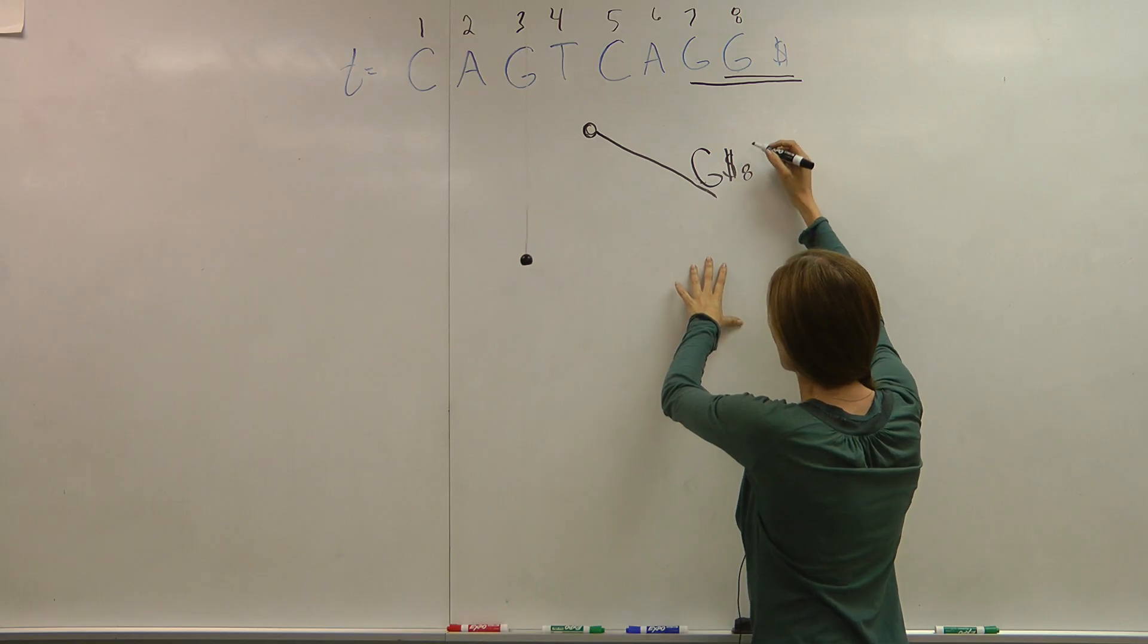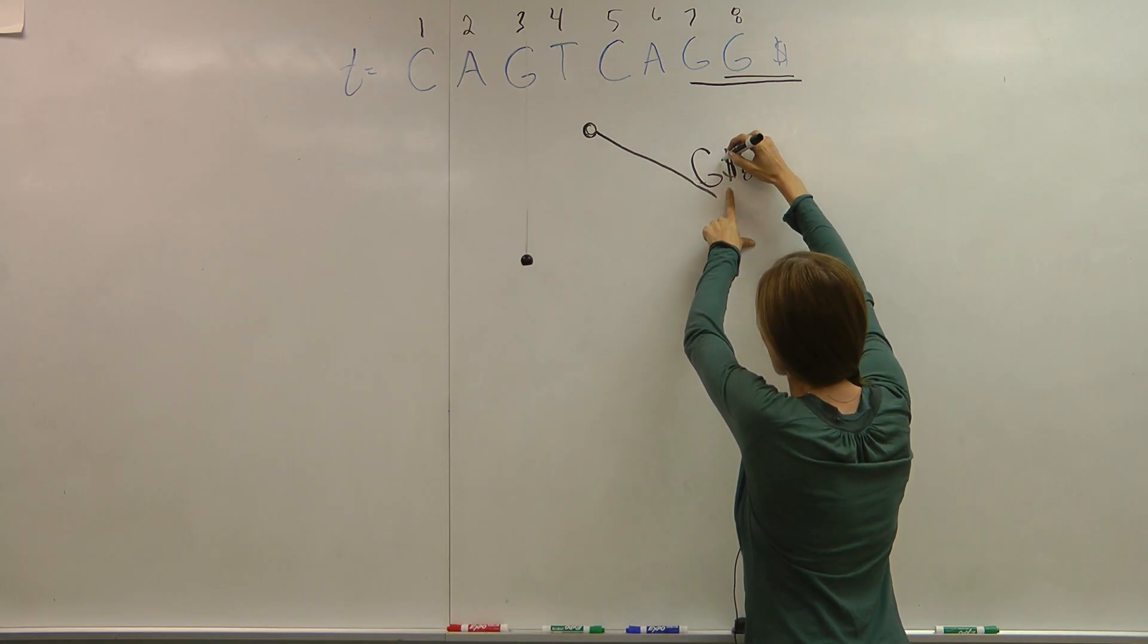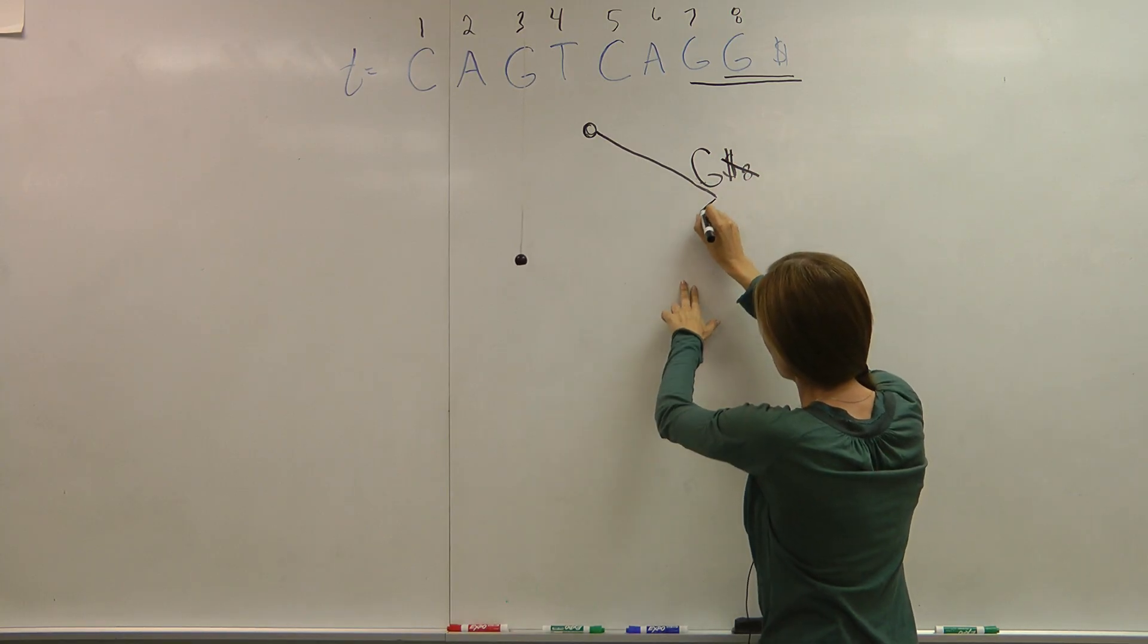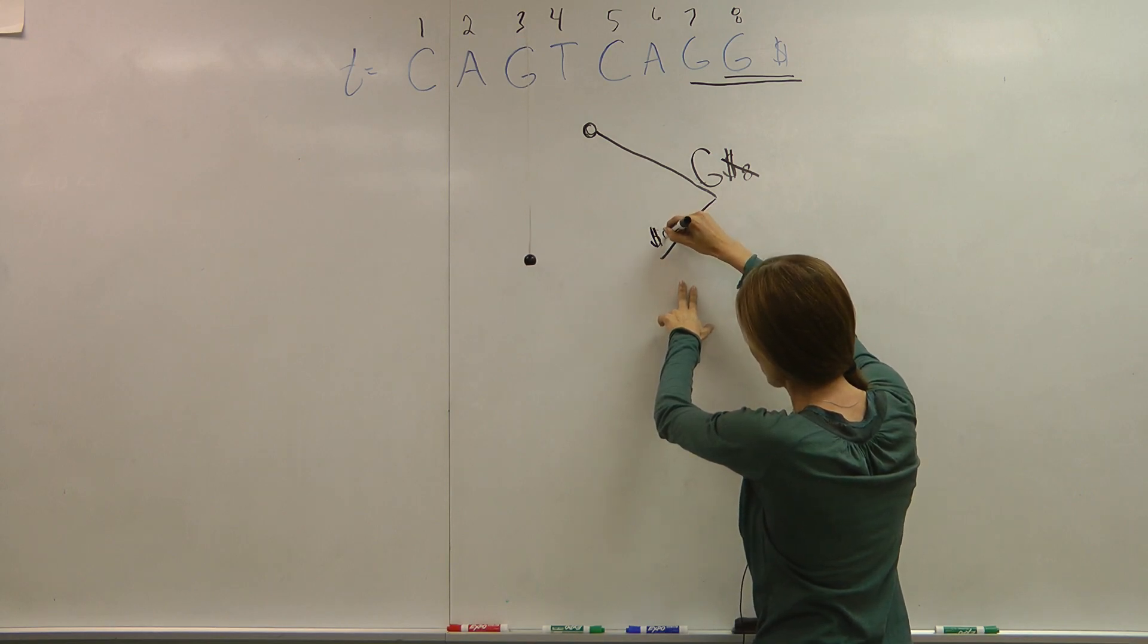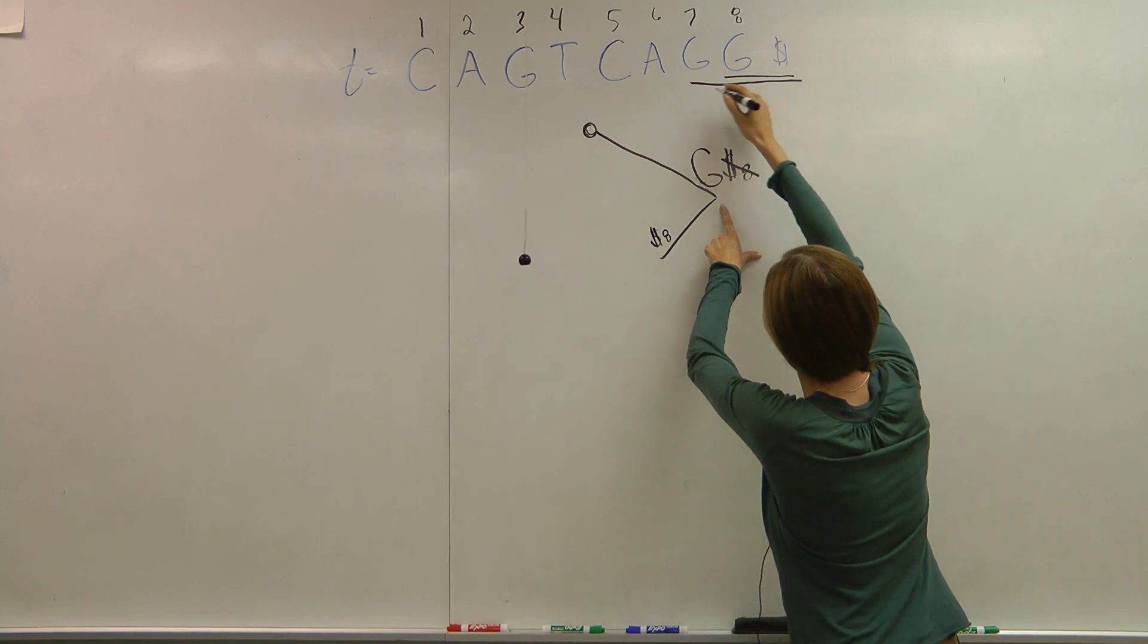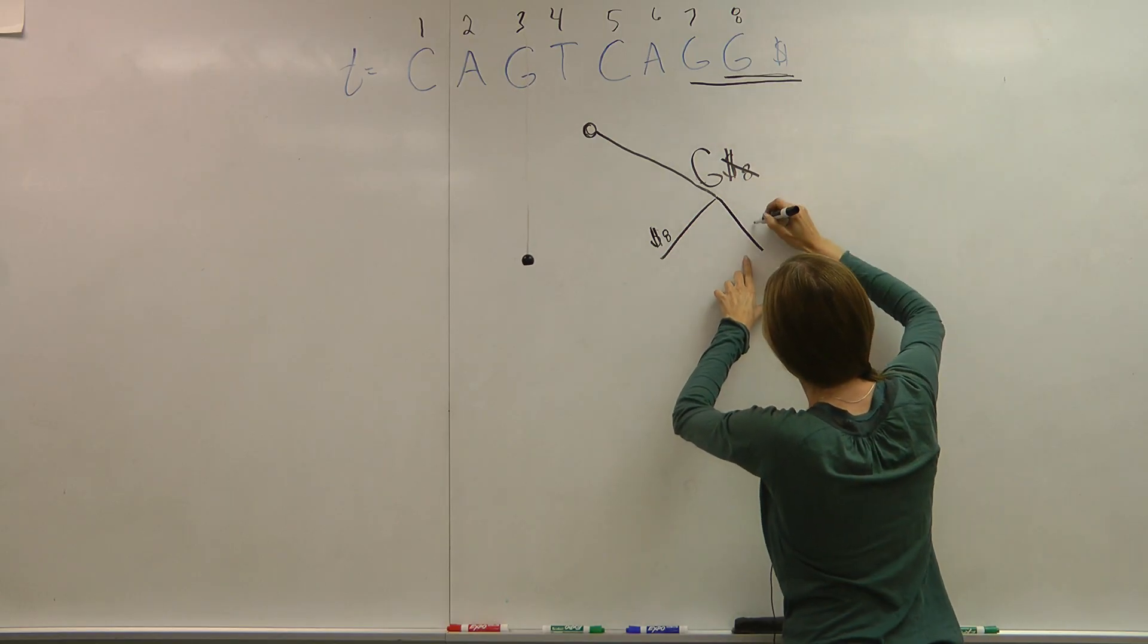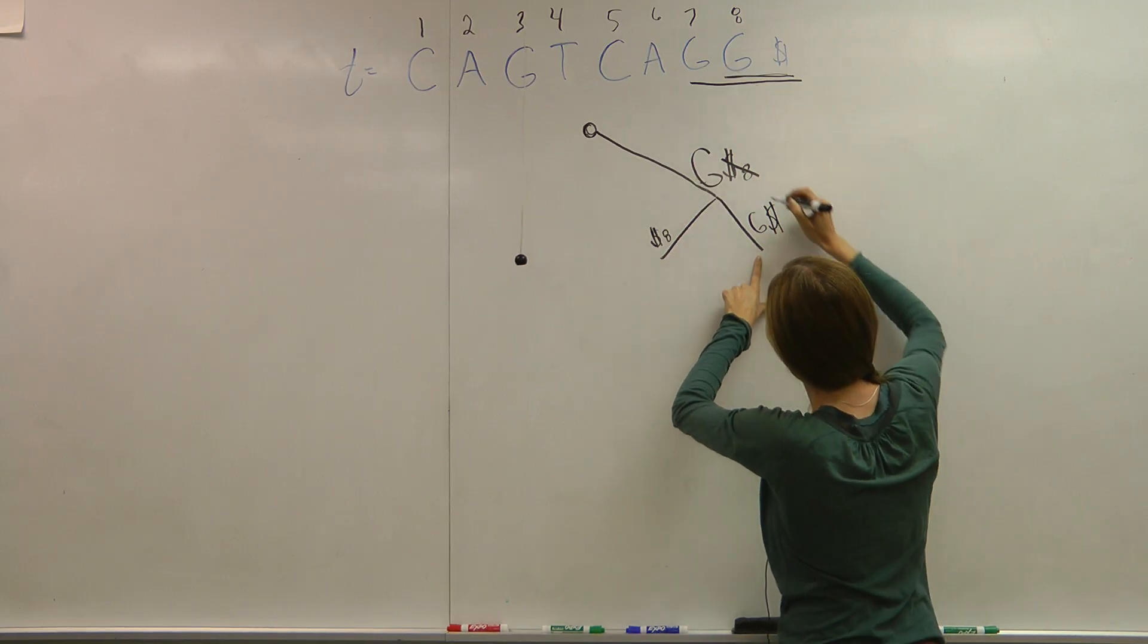I just have the dollar sign. So after this G, I should have two choices. So I have to get rid of my dollar sign and make it its own branch. And I take the index with it. And then my other choice now off of G is G dollar sign, and that's at index seven.